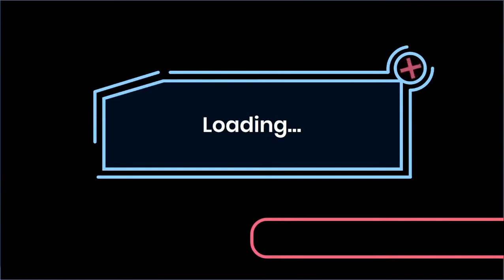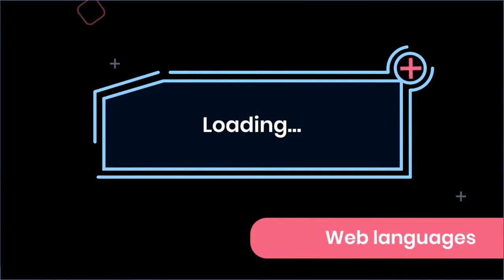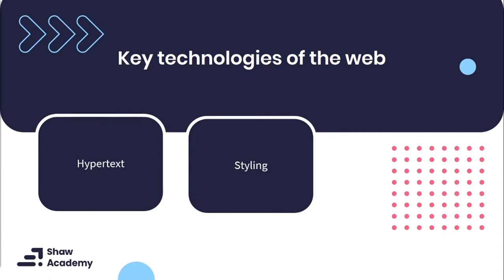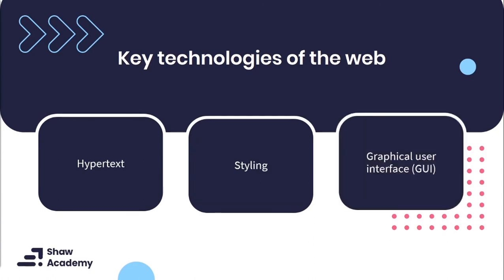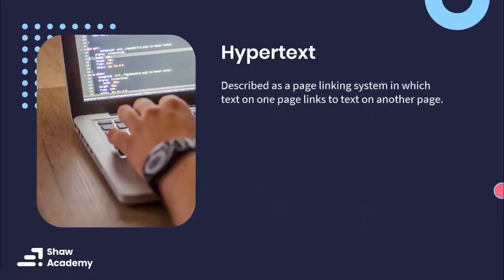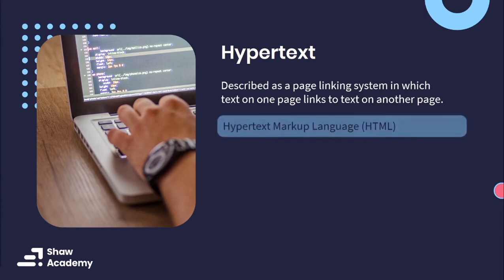Now for our final topic — web languages. We're going to be covering CSS, HTML as a markup language, and have a look at some examples. Generally speaking, there are three core technologies of the web: hypertext, our styling language, and the graphical user interface, otherwise known as the GUI. Hypertext basically describes a page linking system on the web — this is how websites work, where one page leads to or links to another page. That particular page can link to several other pages, which is why we call these documents HTML documents, also referred to as hypertext markup language.